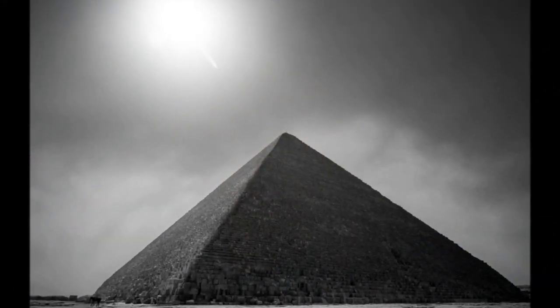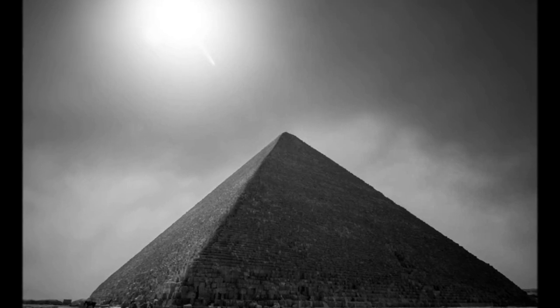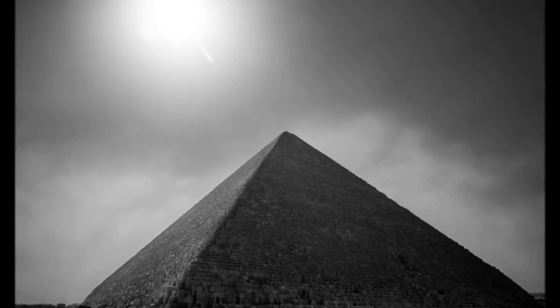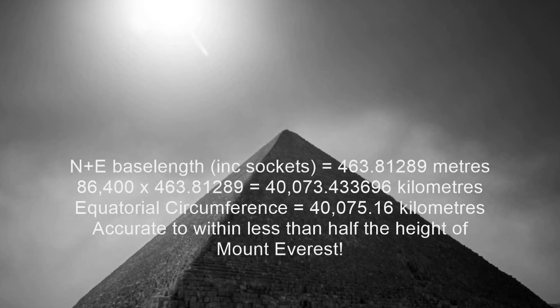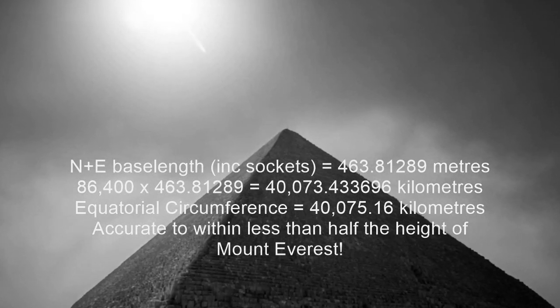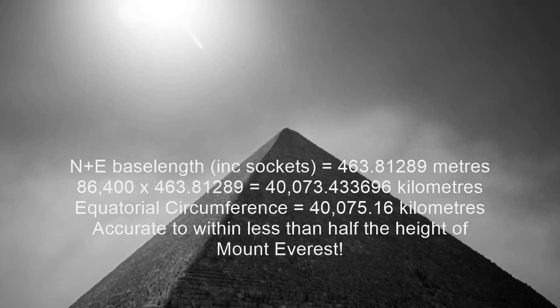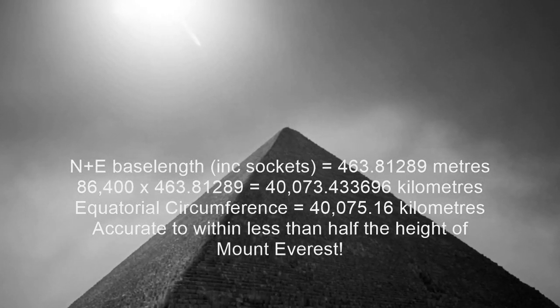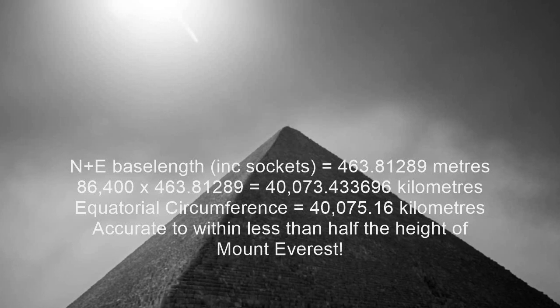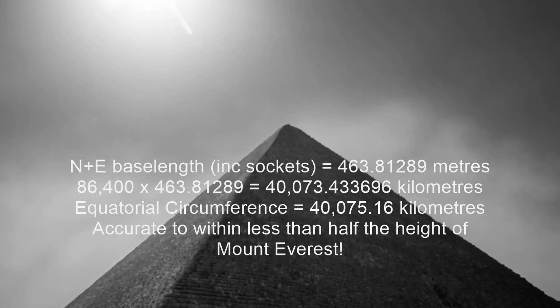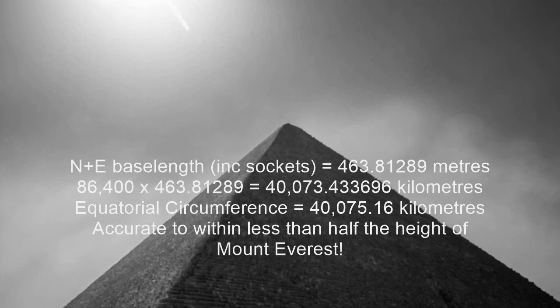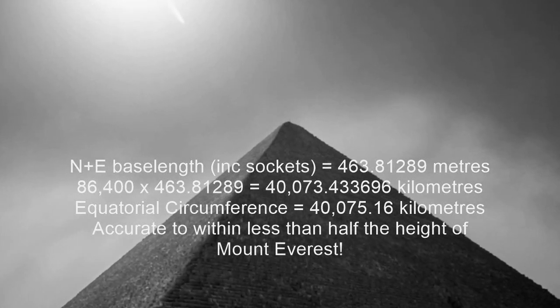In case you were wondering, we can connect the Great Pyramid to the second in the following way. The distance that a point on the equator moves in one second due to the rotation of the Earth is the same as the maximum visible base length of 880 Egyptian royal cubits. In other words, two base lengths, or half the perimeter, is 1/86,400th the equatorial circumference of the Earth. What is the probability that is a coincidence?